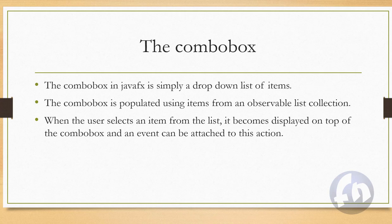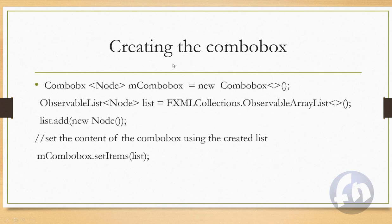Let's see how to create a combo box. You have the combo box node, which is either a String or some other type — basically what the combo box is going to contain. We create an observable list, because the combo box is populated using an observable list, and once we have that we add the nodes to the children and set that observable list.